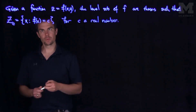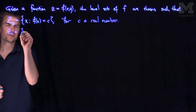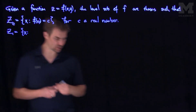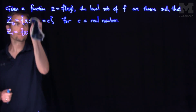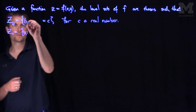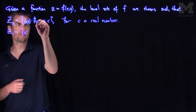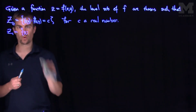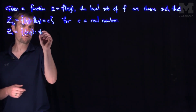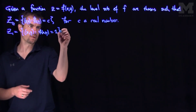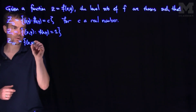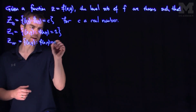So let's get our sense of what this would look like. For example, z would be the set of all points x and y, such that f of x and y is equal to c. So z sub 1 would be the set of all points x and y such that f of x, y is equal to 1. And z sub pi would be the set of all points x and y such that f of x, y is equal to pi.